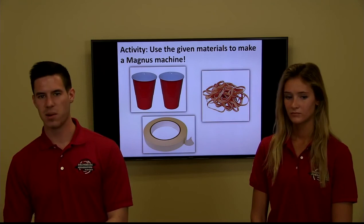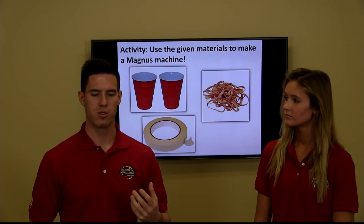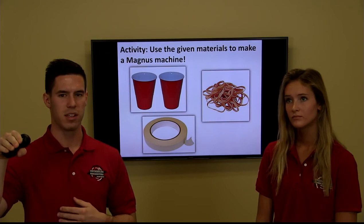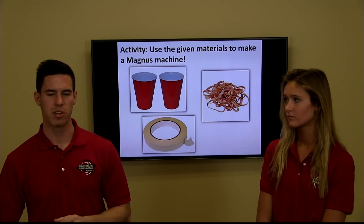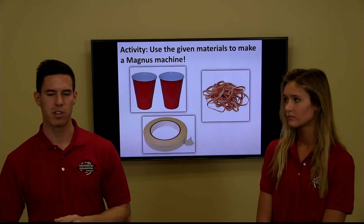Our activity uses two plastic cups, some tape, and rubber bands. You're going to try to make a Magnus Effect glider that can fly up to 10 feet horizontally. Think about how the backspin of the ball in the video allowed it to fight gravity and fly horizontally — you can use the same principle to design a Magnus Effect glider. That's all we have for you guys, so thank you!